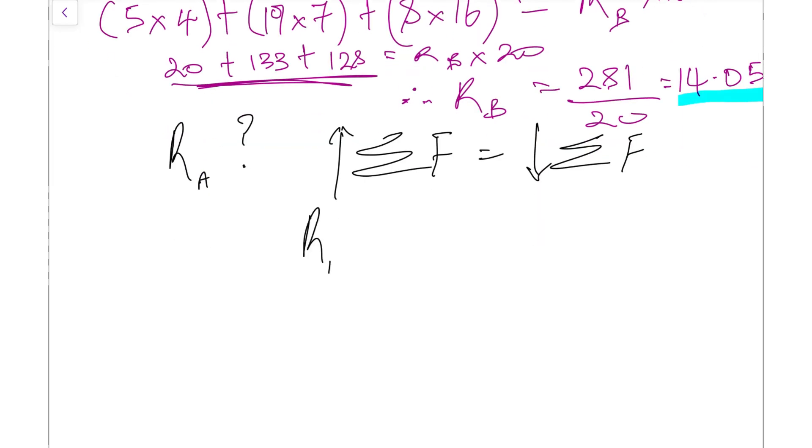So we have R_A plus R_B going up, and what's going down is the 5 kilonewtons plus the 19 kilonewtons and that 8 kilonewtons. We already know what R_B is, so we can put that into the equation: that's 14.05. When we sum these up, we should get 32.